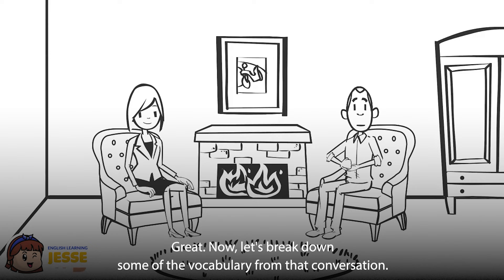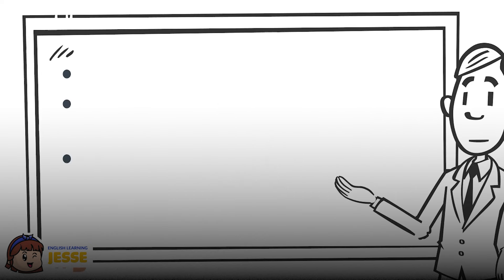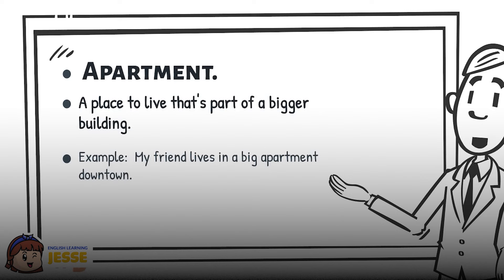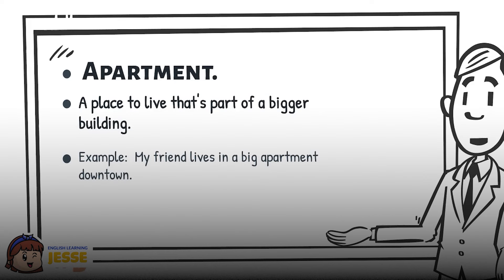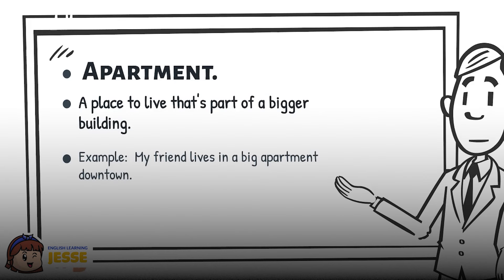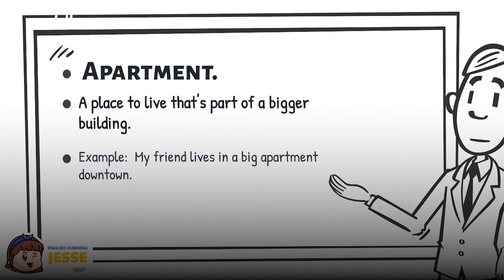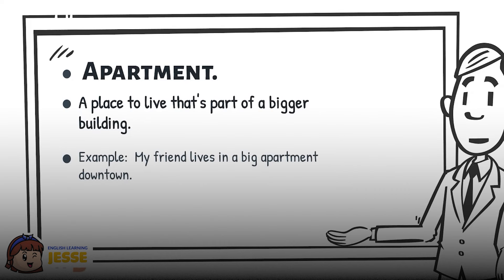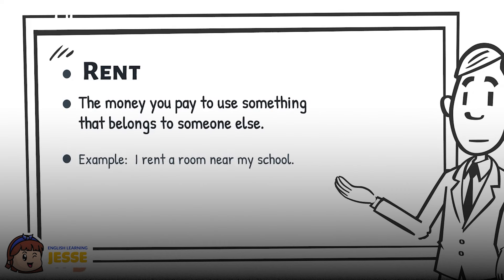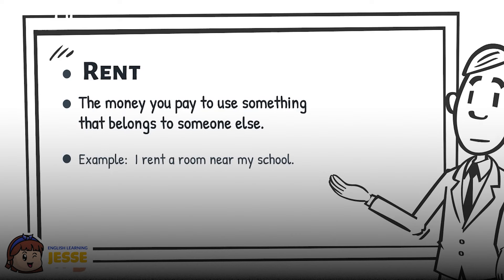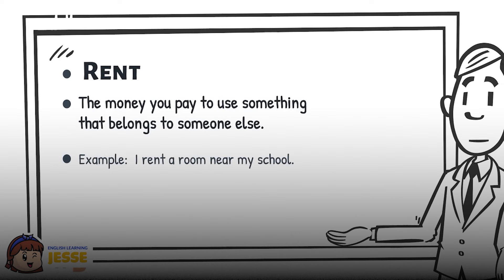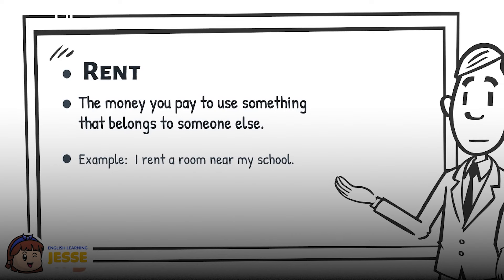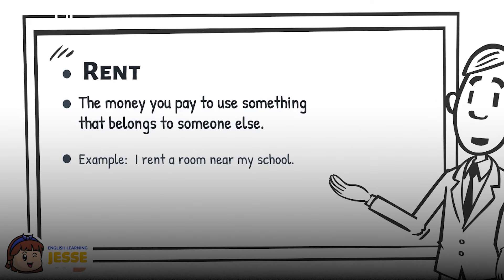Now let's break down some of the vocabulary from that conversation. Apartment: a place to live that's part of a bigger building. Example: My friend lives in a big apartment downtown. Rent: the money you pay to use something that belongs to someone else. Example: I rent a room near my school.